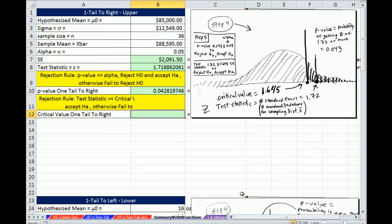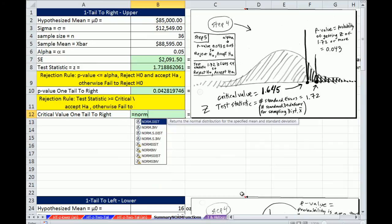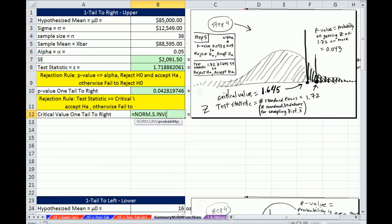Now for the critical value method, we have to take our alpha. We're going to use our standardized normal bell-shaped distribution functions, but we're going to use the inverse. The inverse, we take our alpha and this will deliver a z, which is our marking point, our hurdle. Same thing.